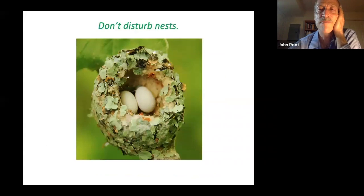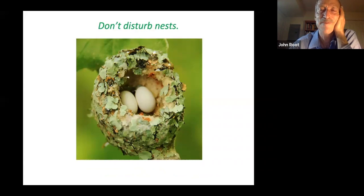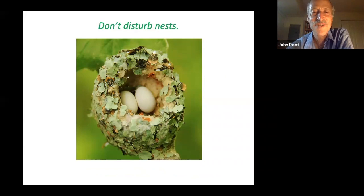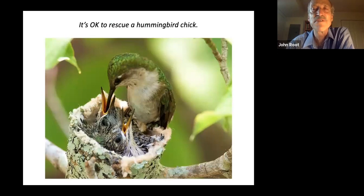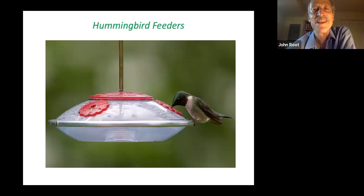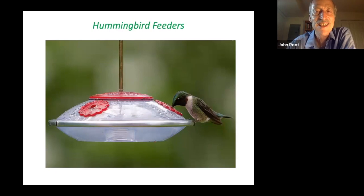Hummingbirds need spider silk to make their nests. Remarkably, as those two eggs hatch and as the chicks grow, the nest will grow because it's made of spider silk — the silk is elastic and the entire nest will expand to double its original size. It is okay to rescue a hummingbird or any other bird chick if you find it on the ground. It's not true that the parent will reject it because it has a human scent on it. Hummingbird feeders can be offered — please don't use red dye, because the feeders all have enough of the color red as part of the design.